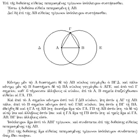Babylonian mathematics were written using a sexagesimal numeral system. From this derives the modern-day usage of 60 seconds in a minute, 60 minutes in an hour, and 360 degrees in a circle, as well as the use of seconds and minutes of arc to denote fractions of a degree.